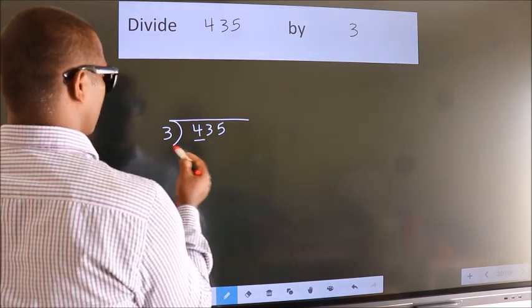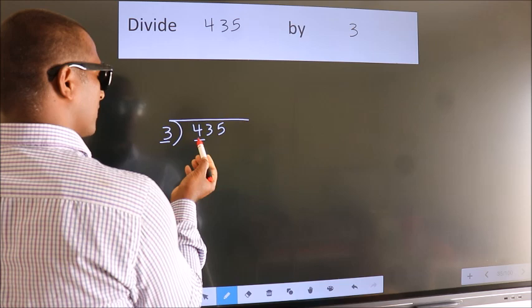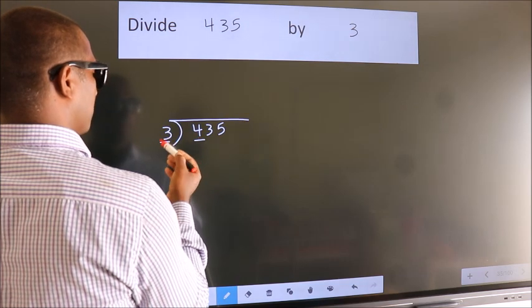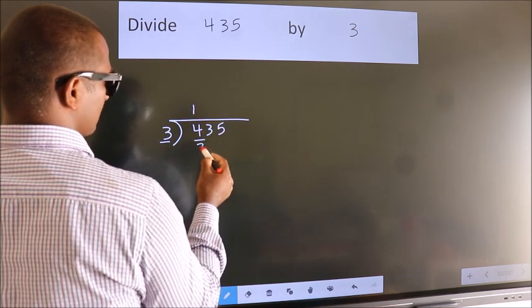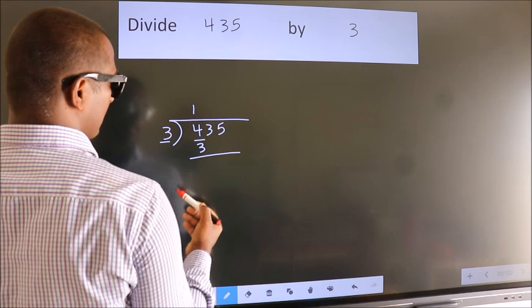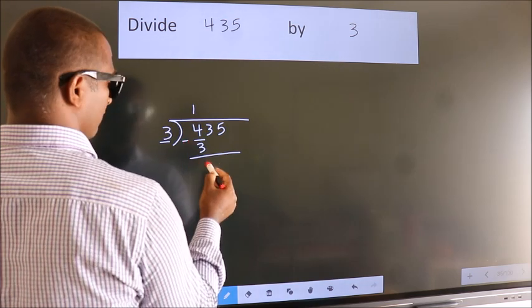Here we have 4, here 3. A number close to 4 in the 3 table is 3 times 1 is 3. Now we should subtract. We get 1.